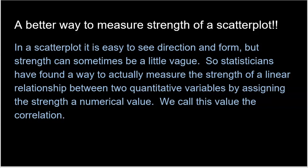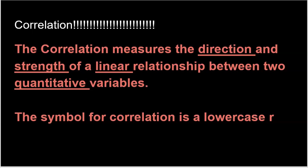We need to find a better way to measure strength of a scatterplot. If you remember from the last topic, in a scatterplot it's very easy to see direction and form — you can easily tell if a scatterplot is going positive or negative, or if there's a line or a curve. But strength can sometimes be a little vague. Statisticians have found a way to actually measure the strength of a linear relationship between two quantitative variables by assigning it a numerical value. We call this the correlation.